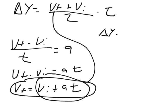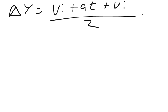So I would have my change in y equals my initial velocity plus at, that would go there, plus my initial velocity again over two, and all of that times time.